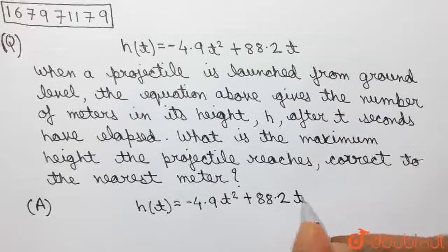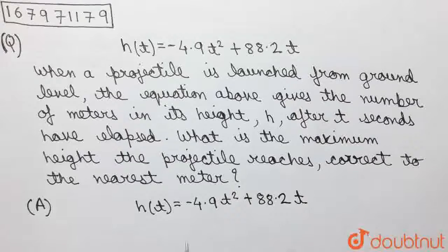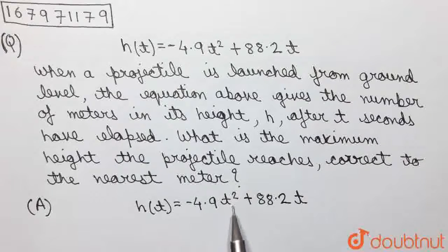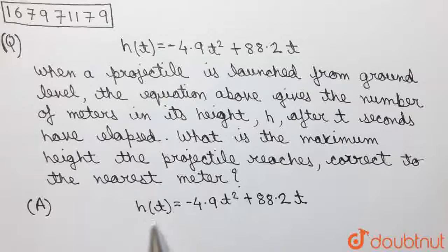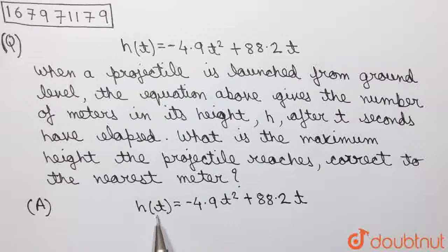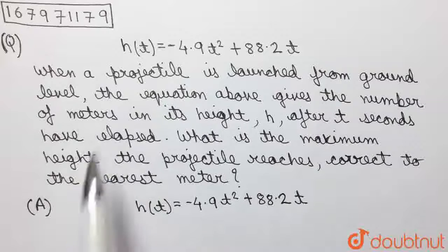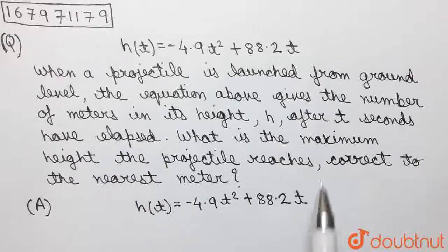And as per the question, in this function, t stands for the number of seconds that have elapsed since the projectile has been launched and h(t) gives the height of the projectile above the ground in meters. And we have been asked to find the maximum height of the projectile.